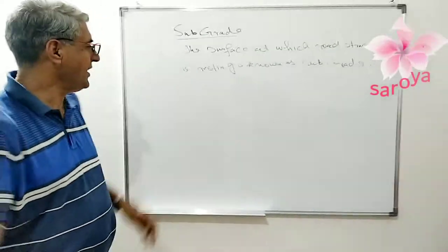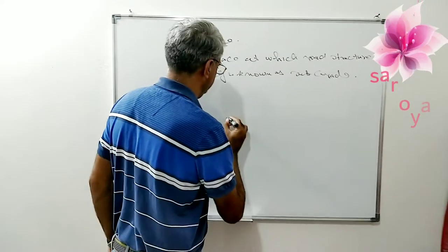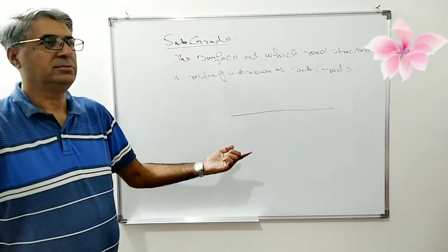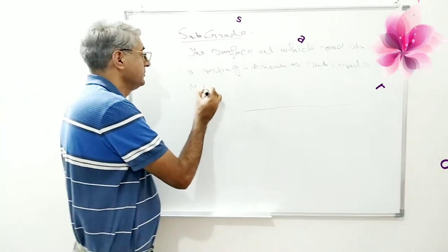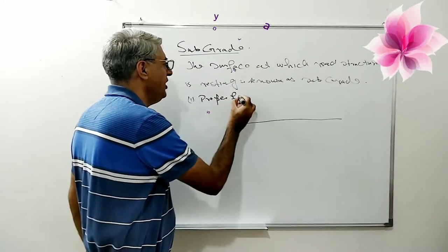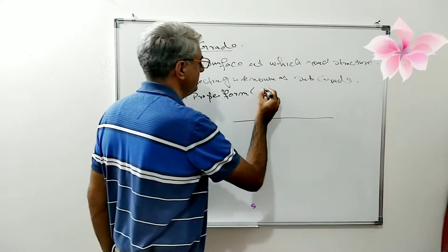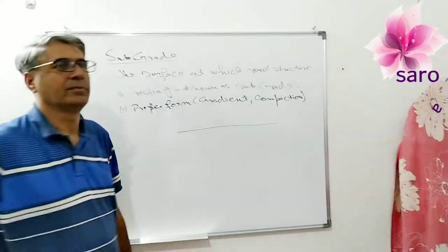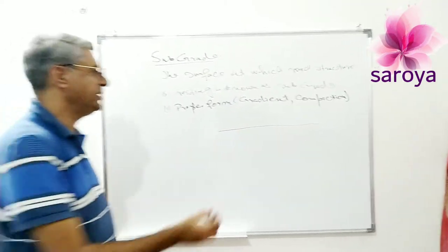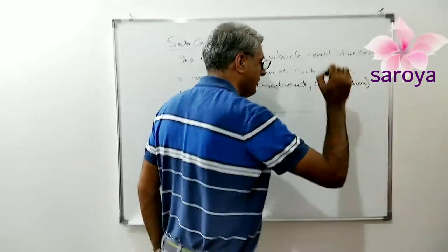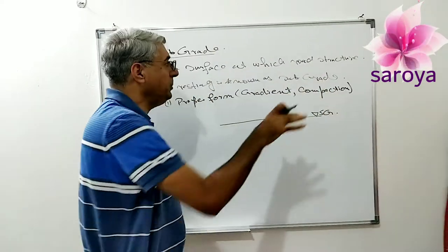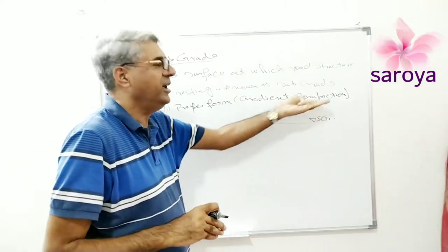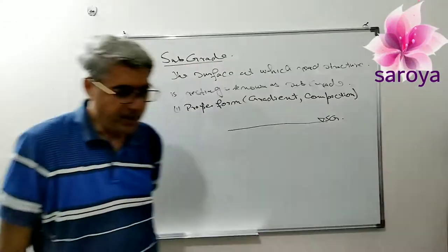When I accept this surface as a subgrade, this surface should be in proper form. Proper form means gradient. When we have reached to this surface and we accept this is our subgrade, this subgrade should be right according to the road cross section. It should be in its proper gradient and it should be in its proper compaction.